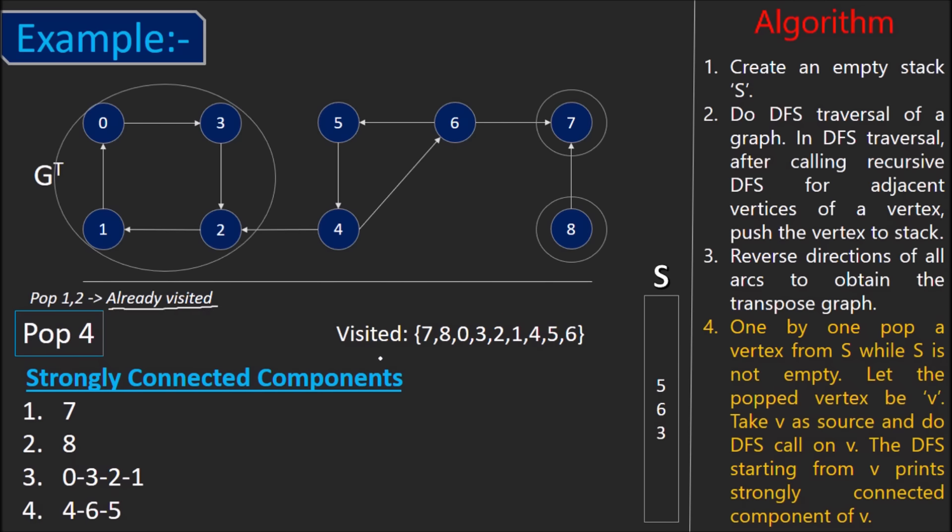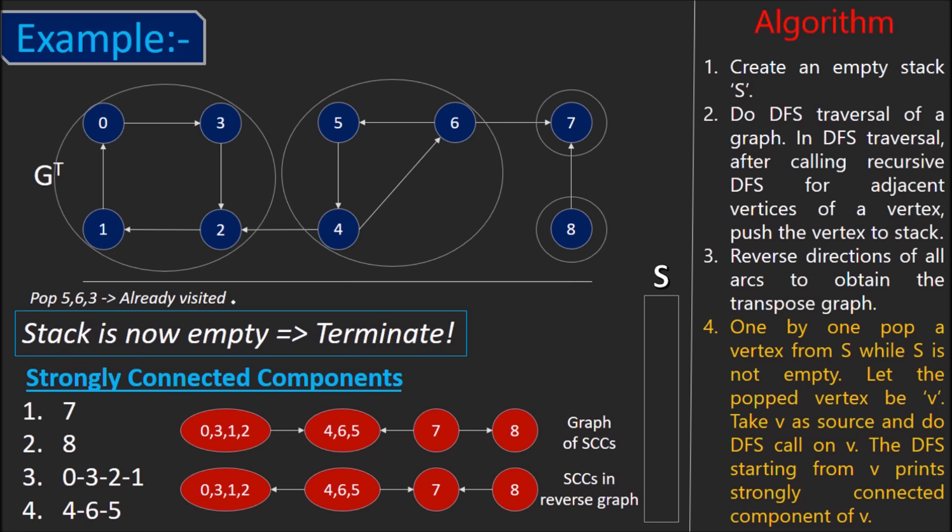Next, pop 4. Apply DFS. Consequently, vertices 6 and 5 get visited. So, 4, 6, 5 will form another SCC and probably the last one because all the vertices are now visited. When we pop 5, 6 and 3 in the following steps, we do not need to apply DFS on them because all of them were already visited. Our stack is now empty and hence, we've reached a terminating condition.